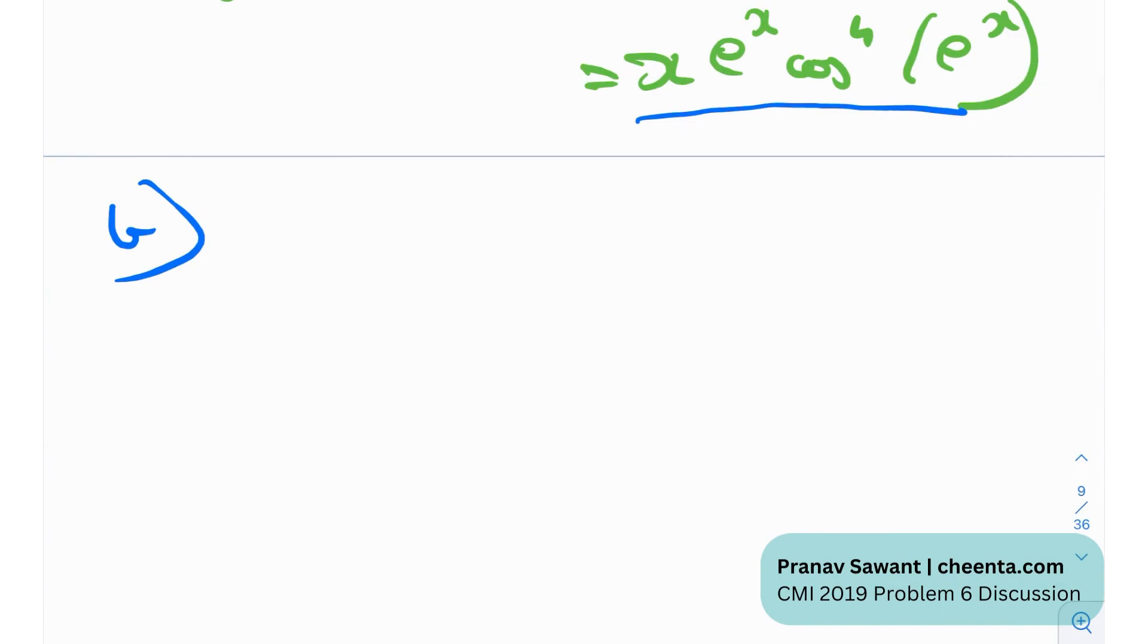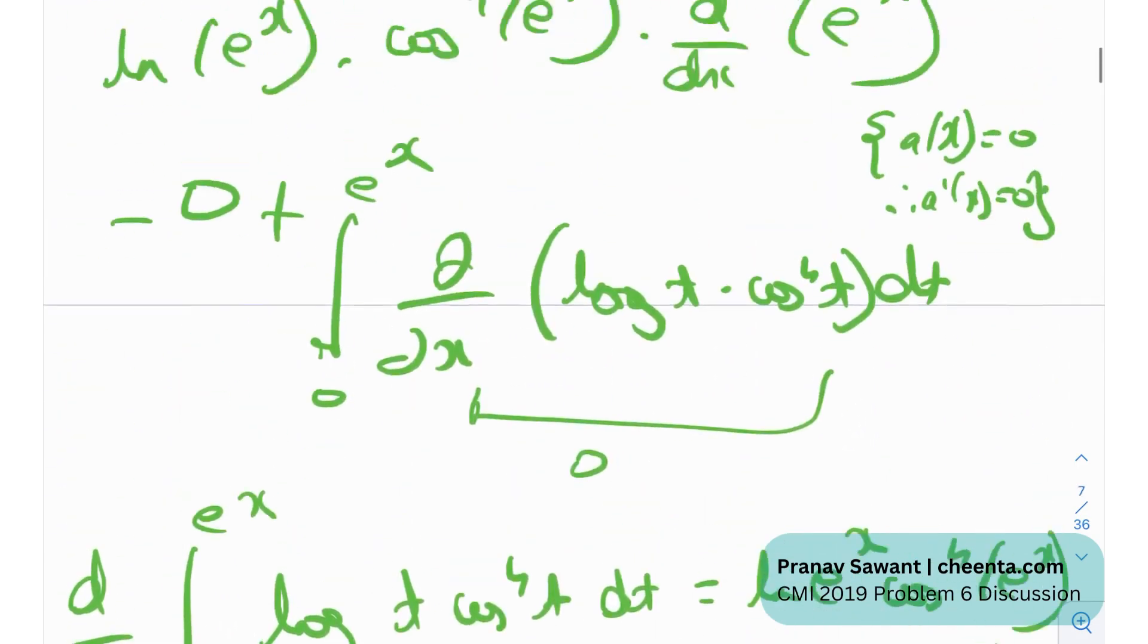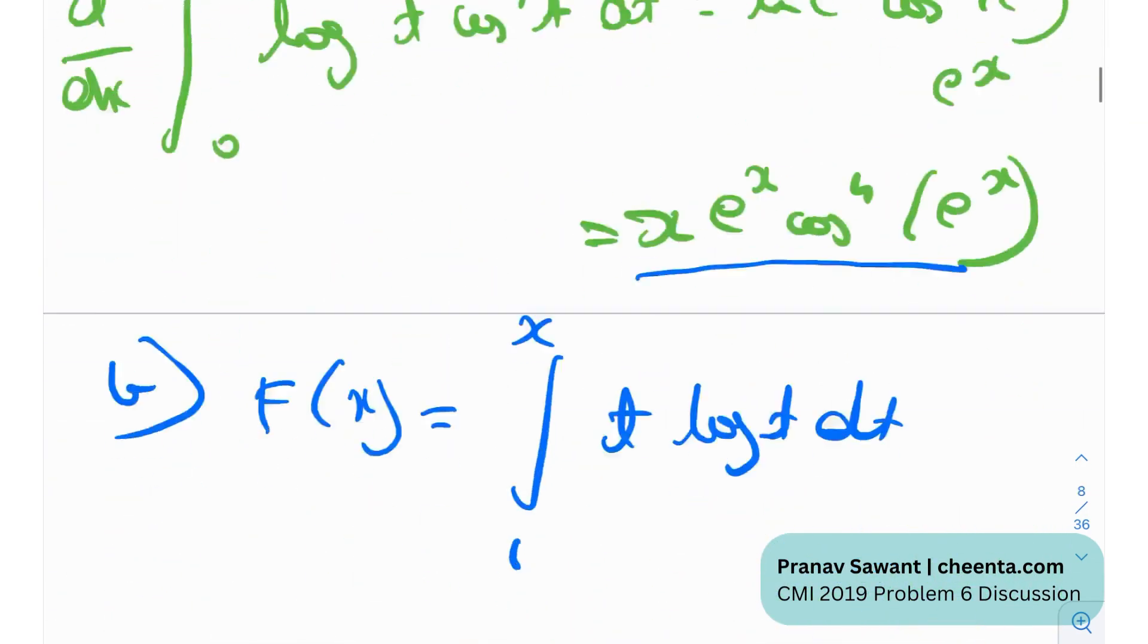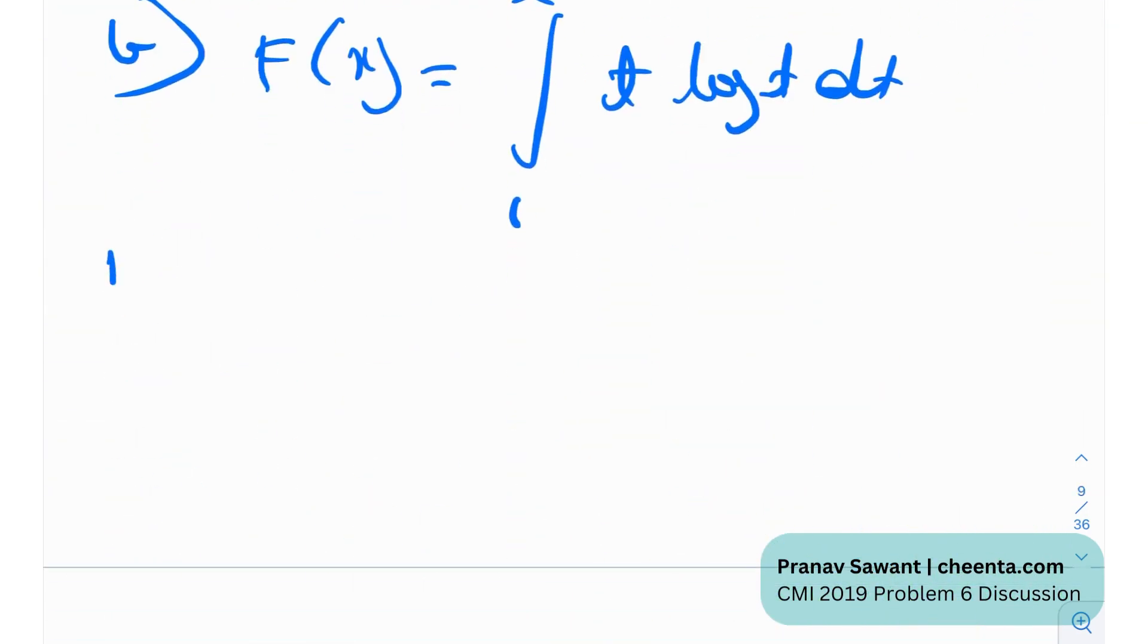Okay so let's start part b. They have given us a function f of x which was integral from 1 to x of t log t dt. That was what it was if I'm not wrong. Let me just see, yeah that is perfect. Now here we're going to need something called the fundamental theorem of calculus.